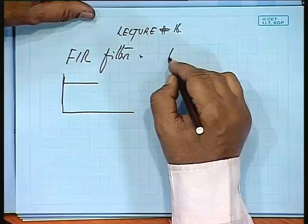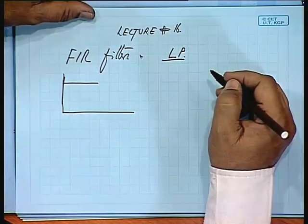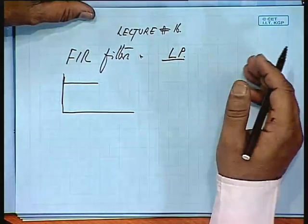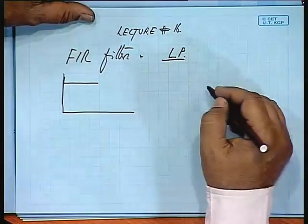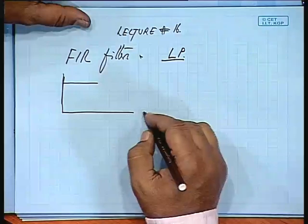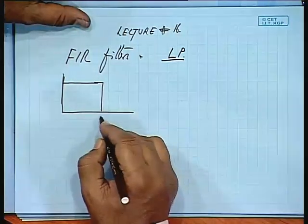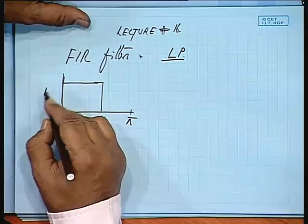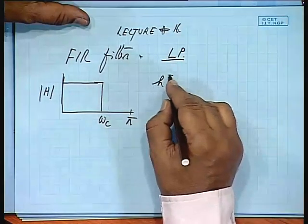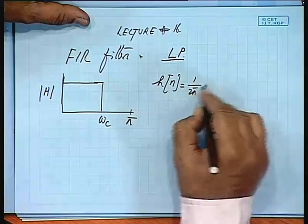Last time we discussed FIR filters with only low-pass specifications. Today we shall take up a few more different types of filters — band-pass and high-pass filters — looking at what the sequence H(n) will be like, while other procedures are similar. Then we shall take up IIR filters, and later revisit FIR filters to discuss FFT. What we took was a low-pass filter: the magnitude against frequency, and we got H(n) as a sequence from integration.